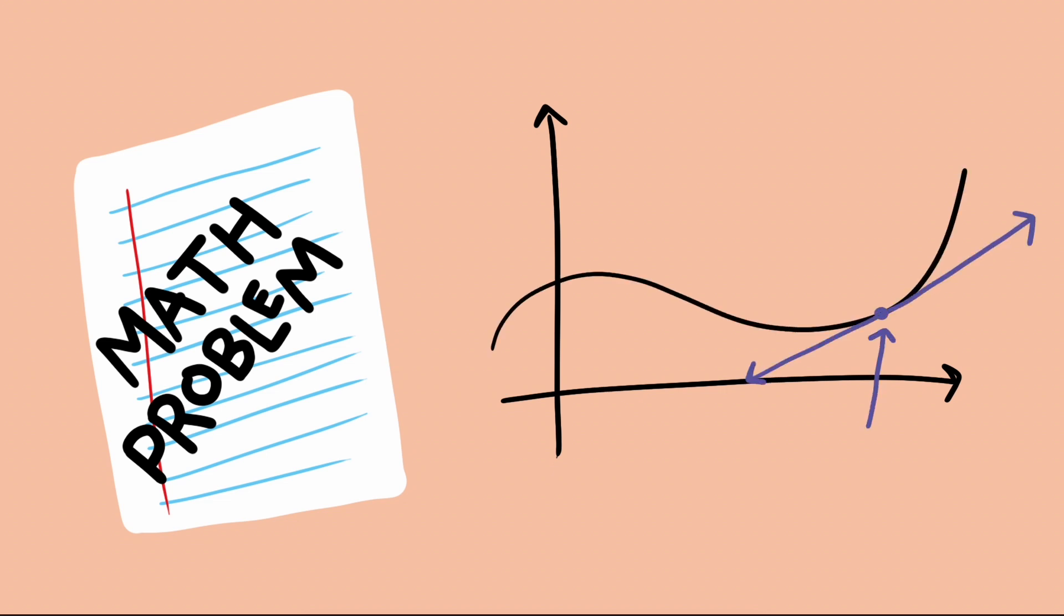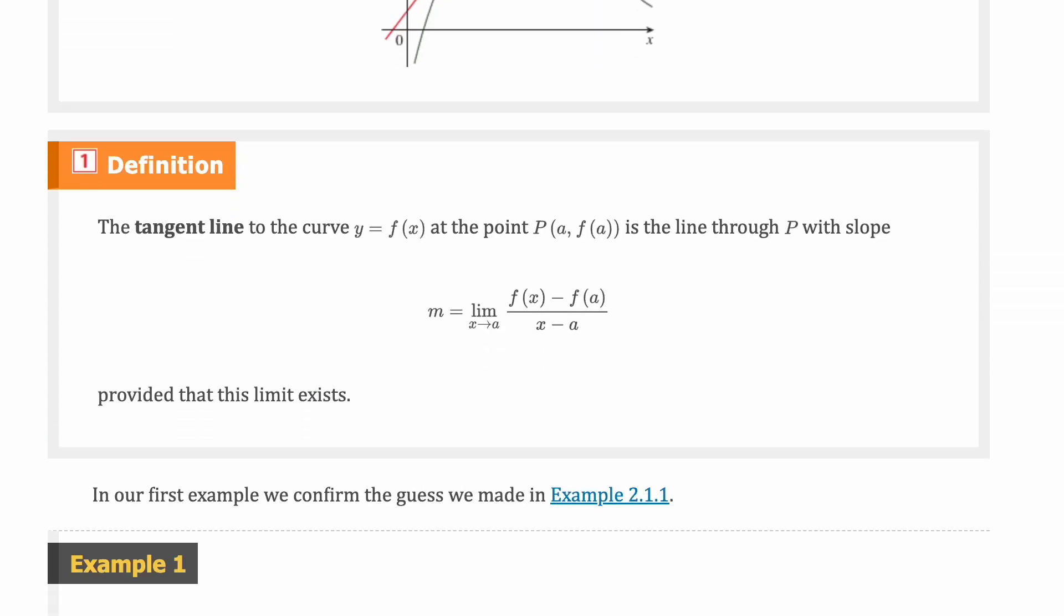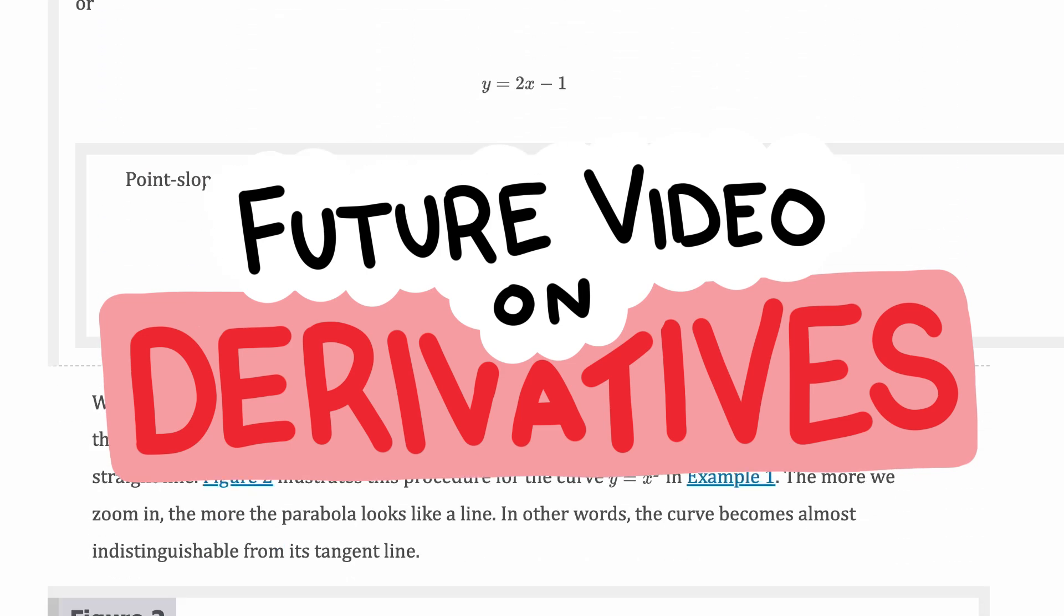Derivatives as slope of tangent lines is a popular way to think about derivatives, but it's not very useful in most real-world situations. If you have had calculus before, then you know what I mean by referring to the slope of the tangent line as a meaning for the derivative, but we will go in-depth into that meaning in a later video.